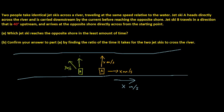So which Jetski reaches the opposite shore in the least amount of time? Well, Jetski B moves in a diagonal direction, so he has to cover more distance with the same speed. Jetski A moves in a straight direction, so he doesn't have to cover as much distance. So the answer is just going to be A.